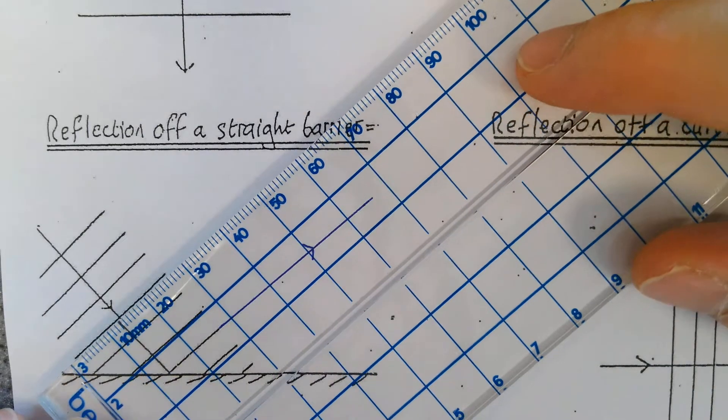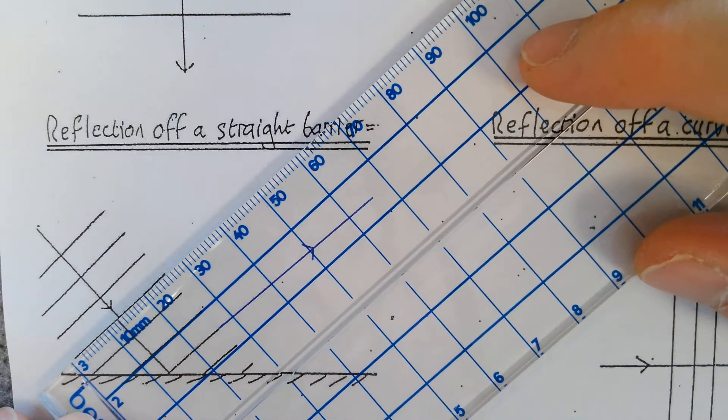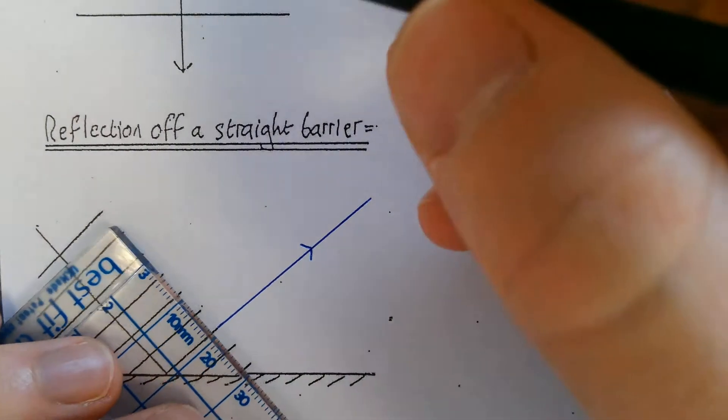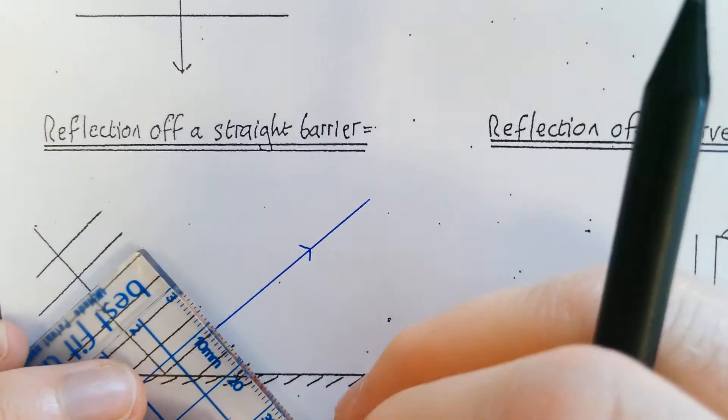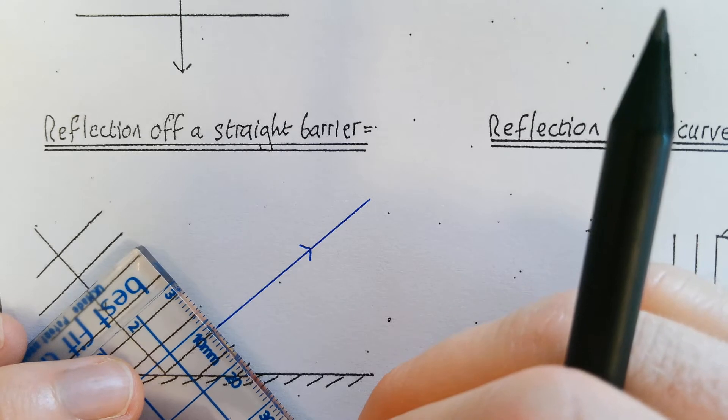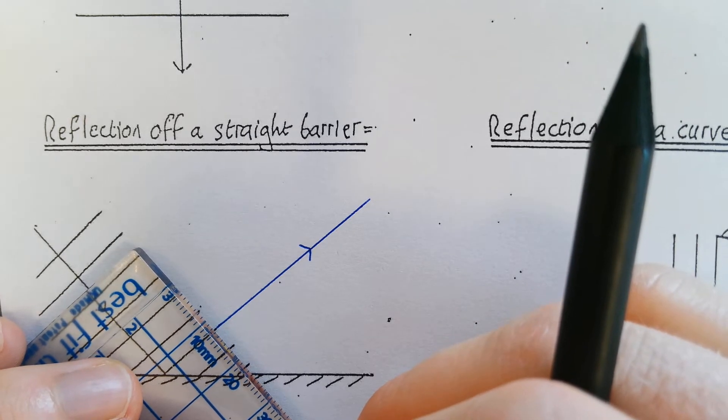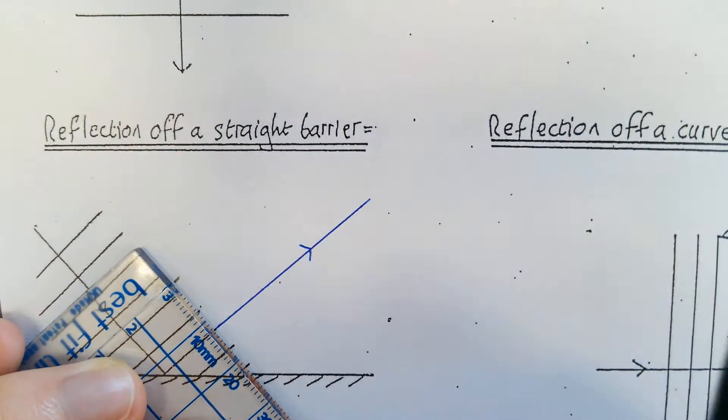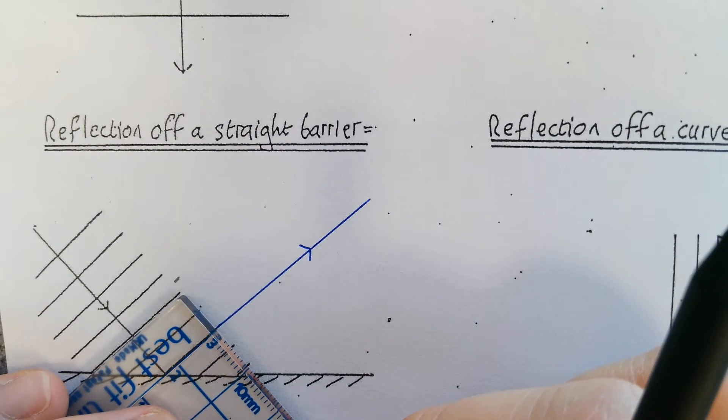Now I need to measure the width of the wave, which is two and a half centimeters. So I need to go up and down here by 1.25 centimeters, and again here - brings me to just the end of that, perfect.